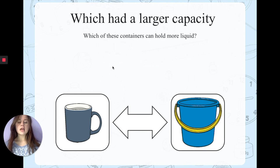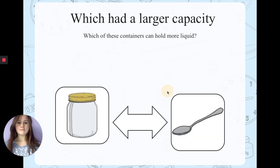Now which has the larger capacity? Do you think that it is the mug or the bucket? Well done if you said the bucket. Which has a larger capacity? Is it this jar or this spoon? Well done if you said the jar.